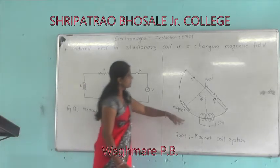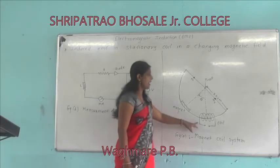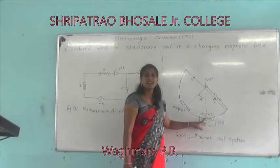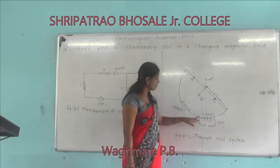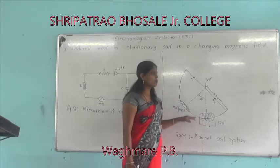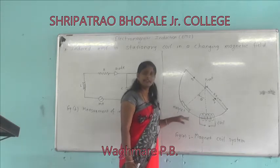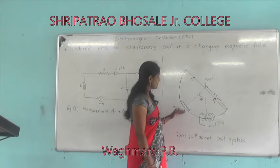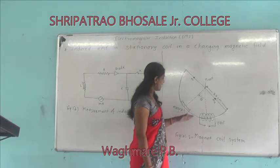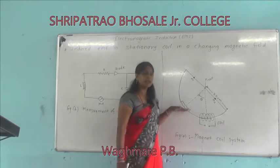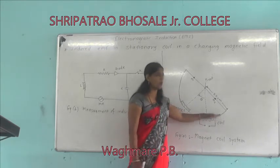We can say that this coil has near about 10,000 turns, and the diameter of this coil is such that the magnet can pass through this coil.